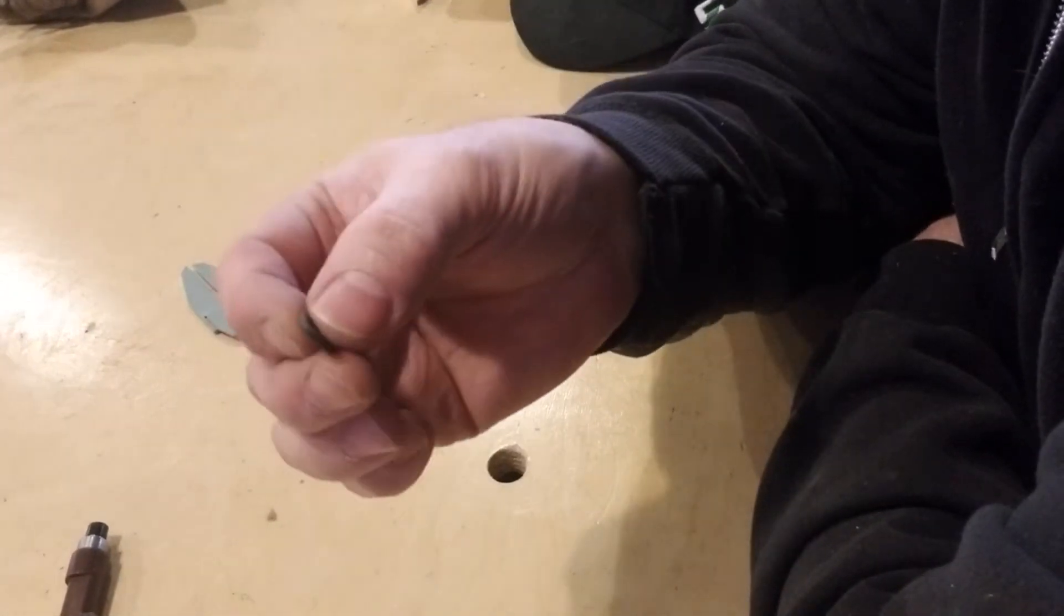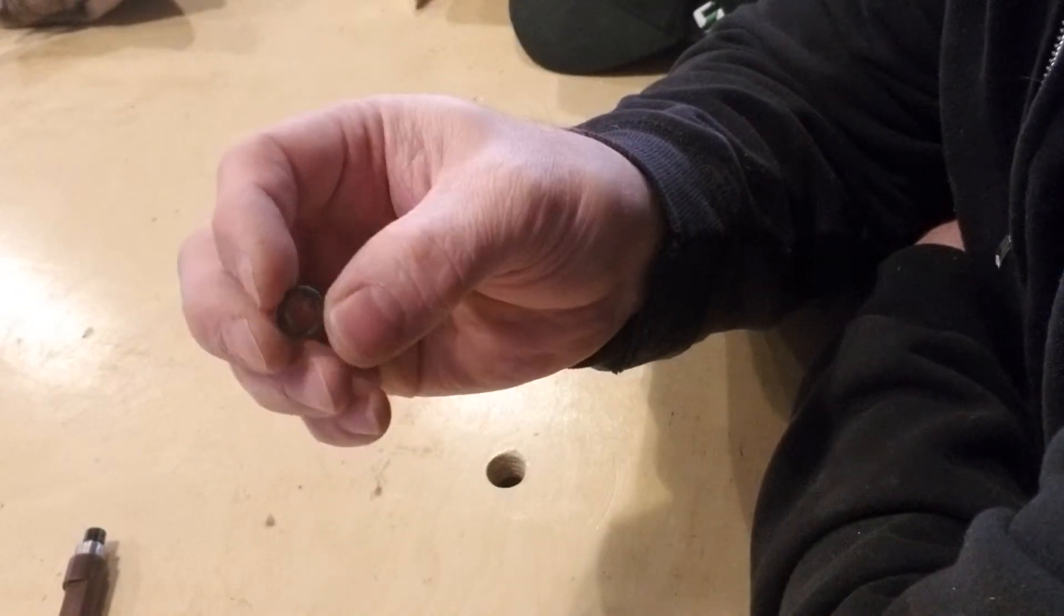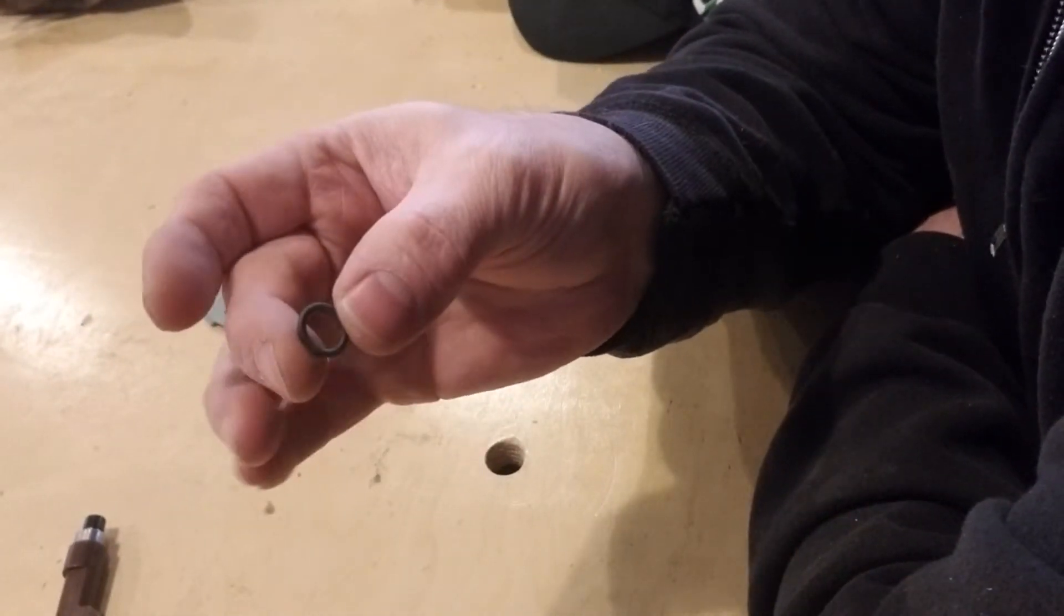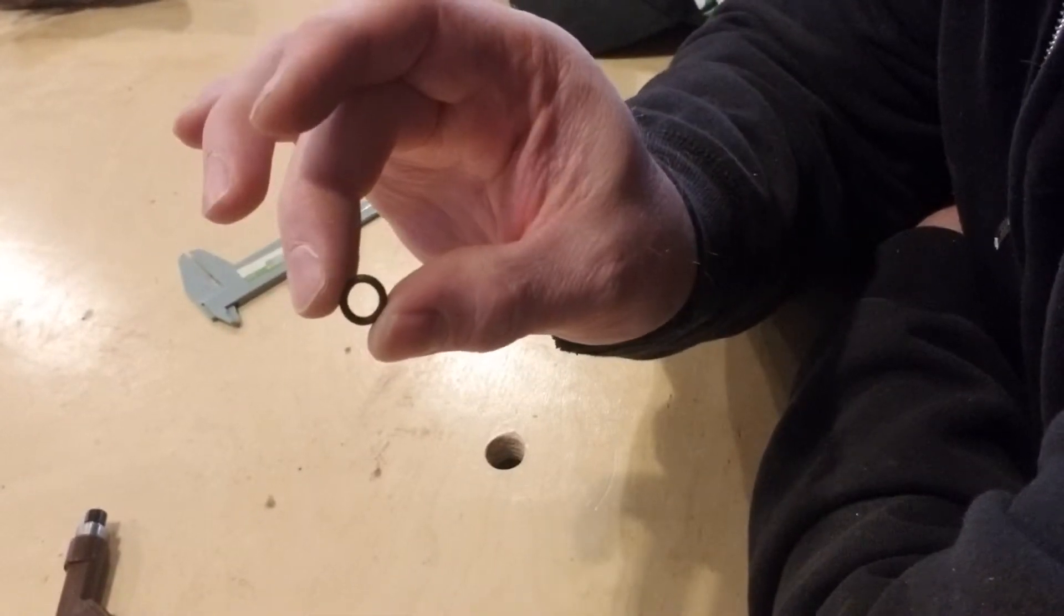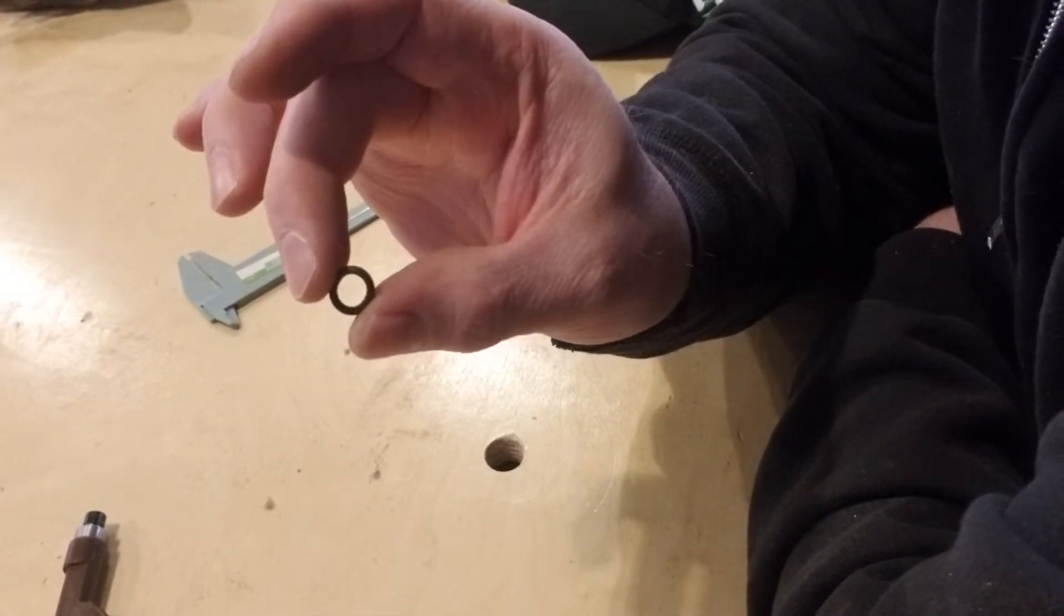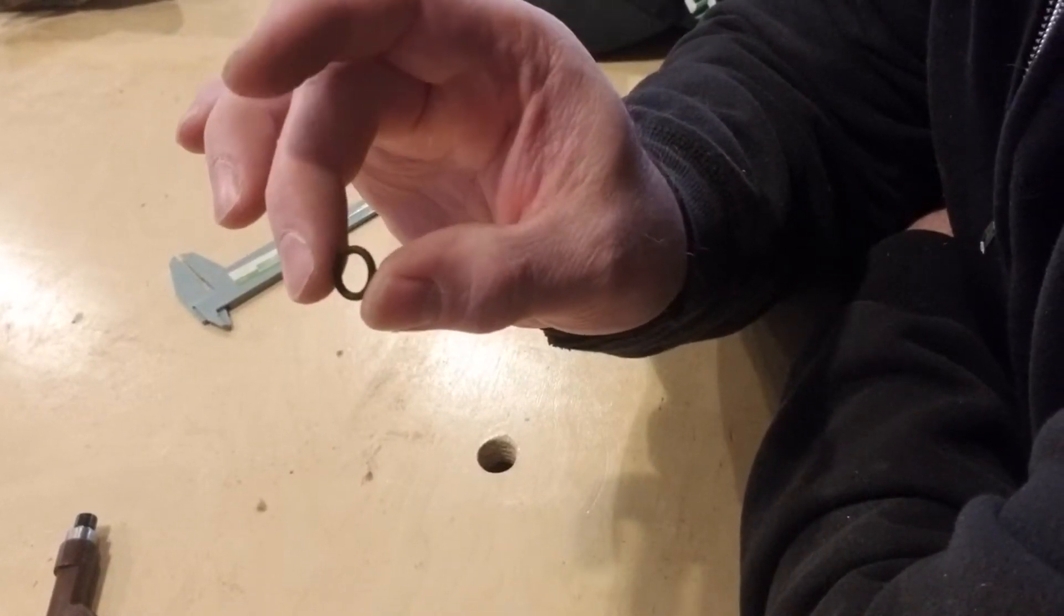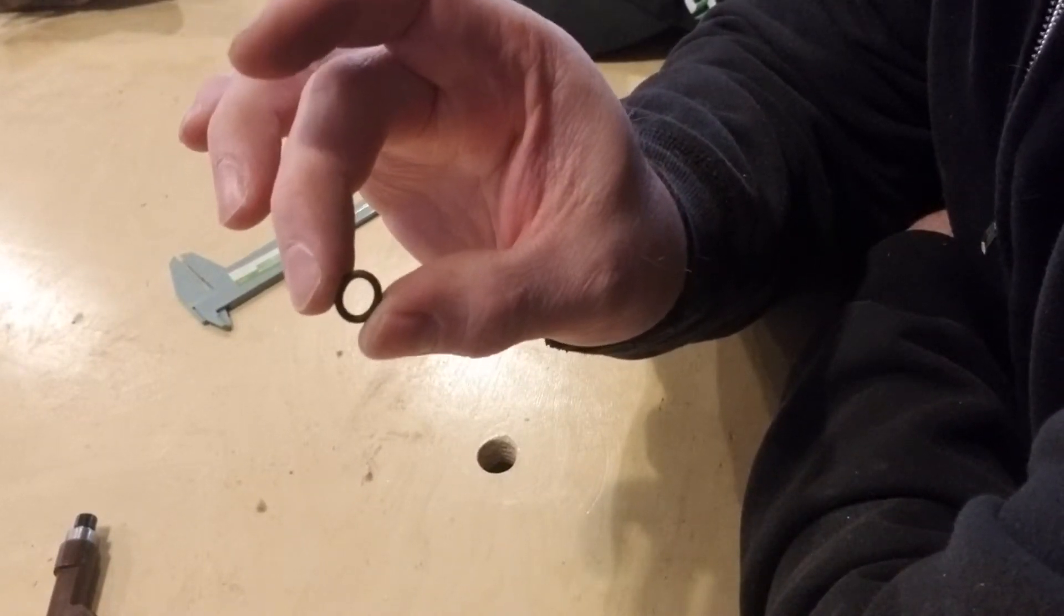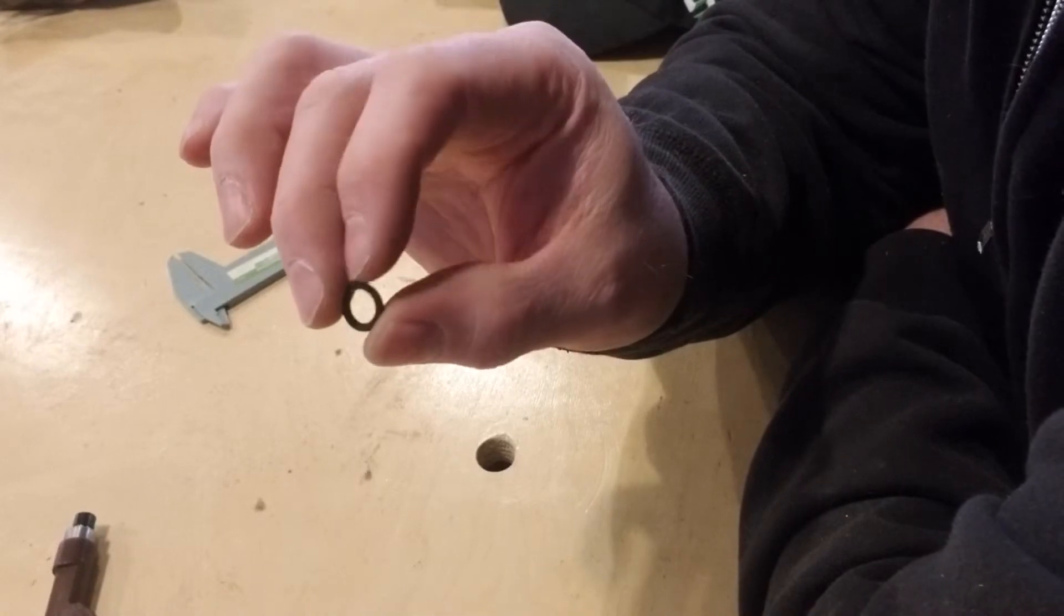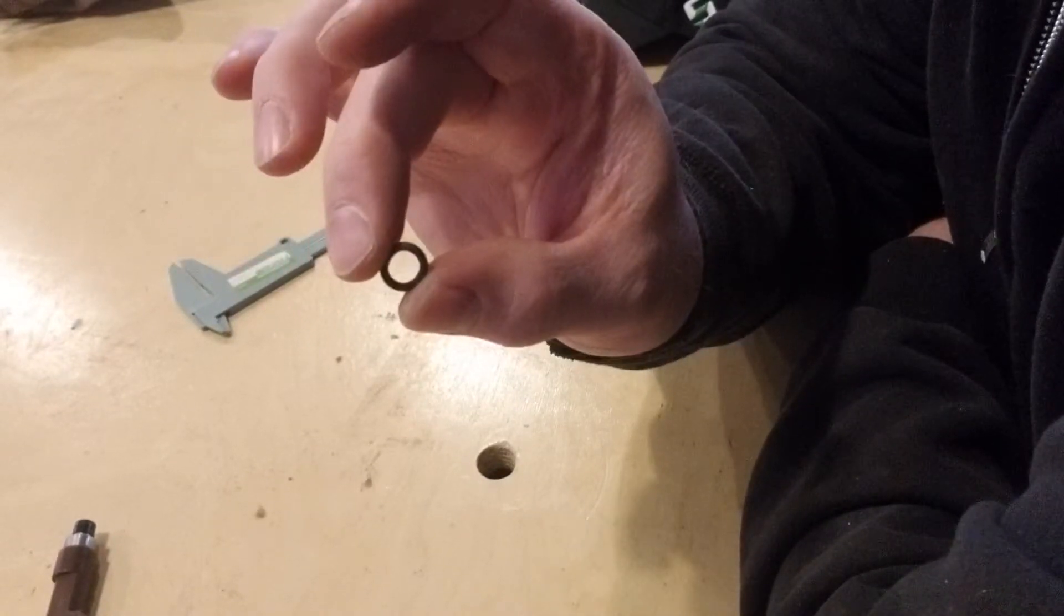So what I ended up doing is I found a universal kit online, Amazon, and they had 250 O-rings for $10. Now there's a variety of sizes, but the size I needed was 8, 12, by 2. And in a bulk pack, they listed it as an 8-millimeter O-ring.